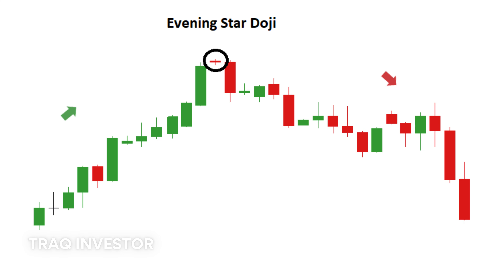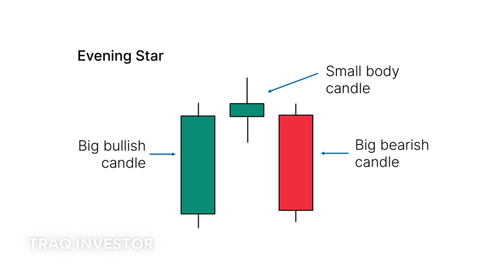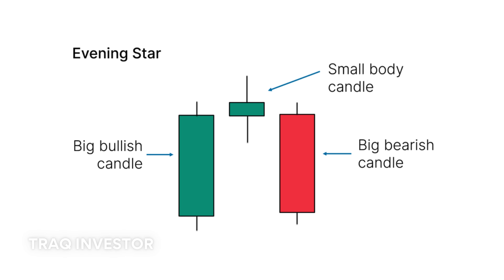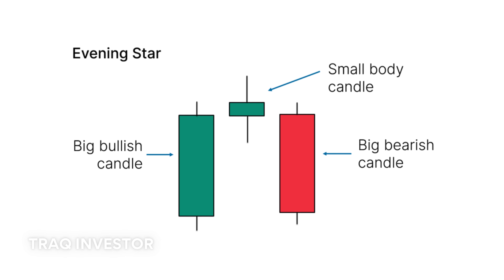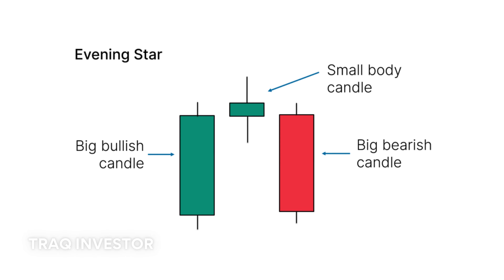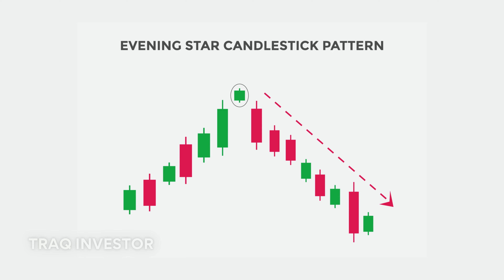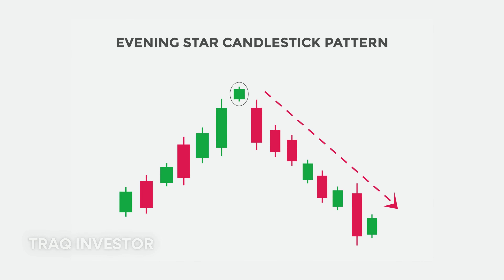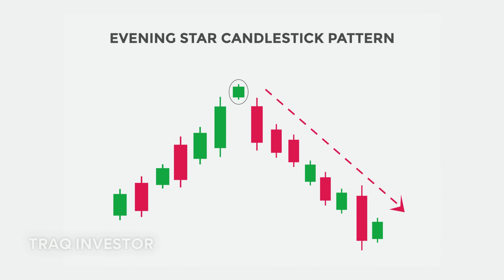We have the evening star, a three-candlestick pattern akin to the bullish morning star. It comprises a short candle sandwiched between a long green candle and a sizeable red one. This signals a reversal of an uptrend, and its impact is particularly potent when the third candlestick erases the gains of the first candle.